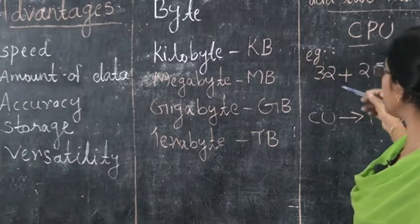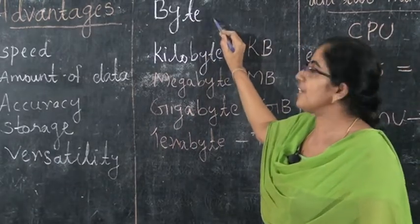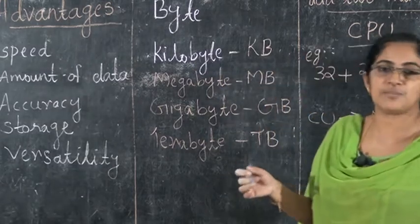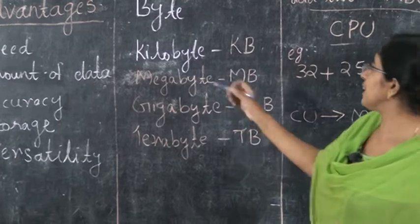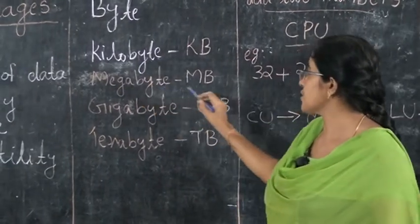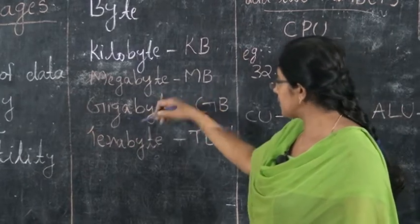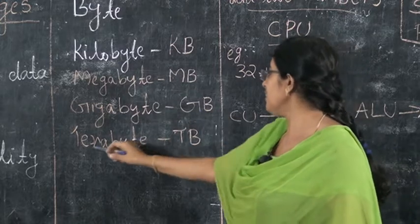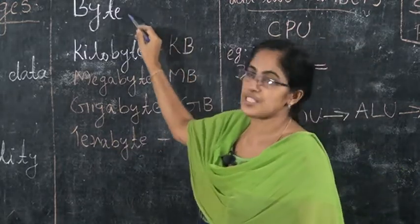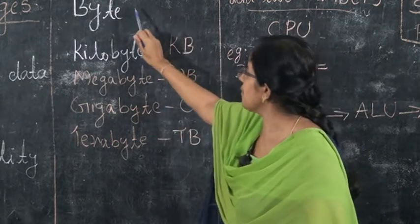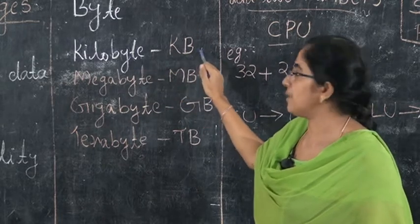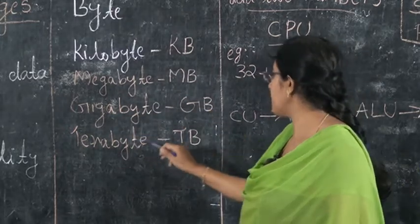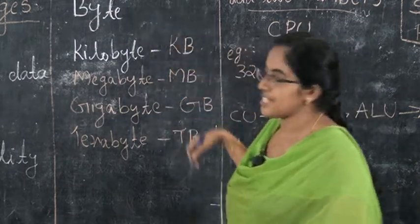The basic unit of computer memory is the byte. Next is kilobyte (KB), then megabyte (MB), then gigabyte (GB), and finally terabyte (TB). So the memory units in order are: byte, kilobyte (KB), megabyte (MB), gigabyte (GB), and terabyte (TB).